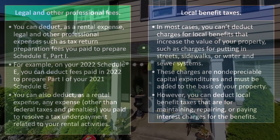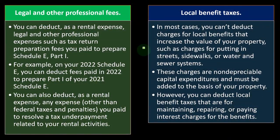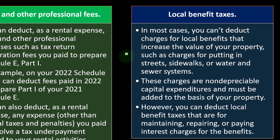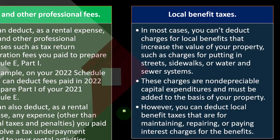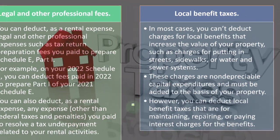From our perspective, we would like to expense these now rather than adding them as part of the property so we get the tax benefit today rather than depreciating them over a very long timeframe. That common scenario often comes up: can I expense it now rather than capitalizing it? The tax code often says we want you to include that as a capital asset so you get the expense, but only as you depreciate it over a long timeframe. However, you can deduct local benefit taxes that are for maintaining, repairing, or paying interest charges for the benefits.